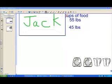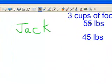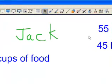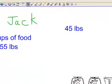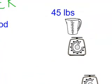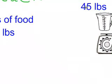Let's look at Jack's problem. Jack's problem says that there's three cups of food for every 55 pounds. Jack weighs 45 pounds. So let's look at how to set this problem up in order to solve it. First, we have three cups of food for every 55 pounds. We've used two bits of information that we have from the problem. We have one more bit of information of 45 pounds.